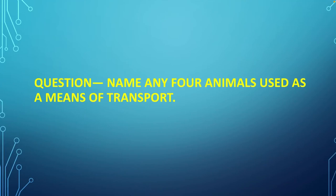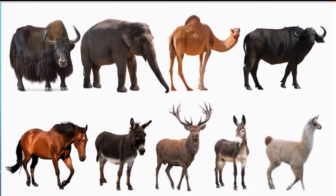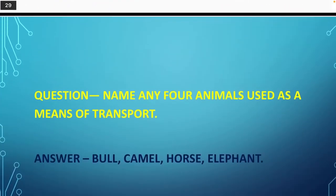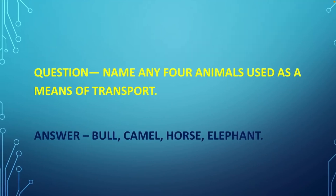Next question: Name any four animals used as a means of transport. These are means of transport: yak, elephant, camel, buffalo, horse, donkey, llama, and pony. These are a few animals which are used as means of transport. Answer: Bull, camel, horse, elephant.